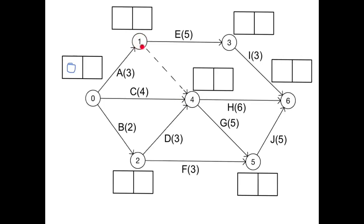In order to get to event 1, we only have to complete activity A, so we can be there at time 3. Similarly, to get to event 2, we only have to complete activity B, so we can be there at time 2.